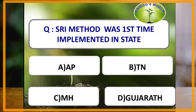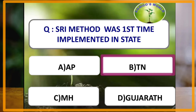SRI is the System of Rice Intensification, used for increasing rice production in irrigated conditions. It was developed in Madagascar and was first implemented in the state of Tamil Nadu, and later in Andhra Pradesh. So the answer is Tamil Nadu.